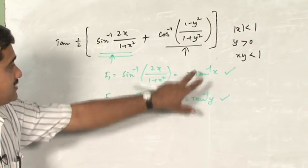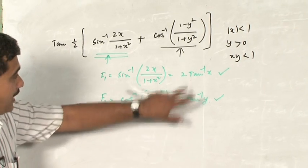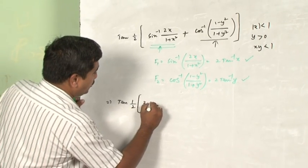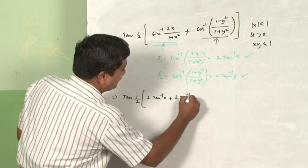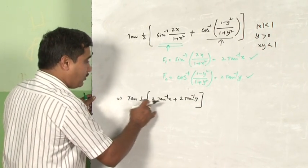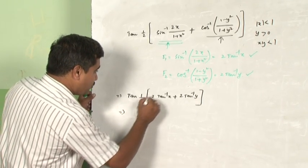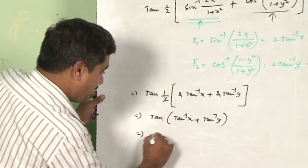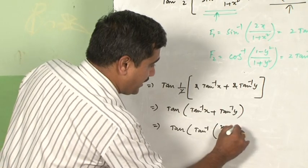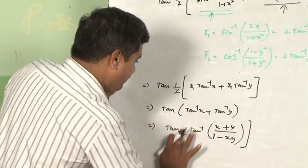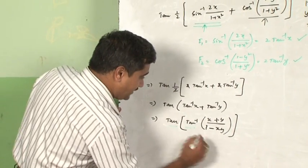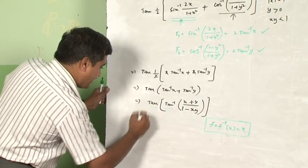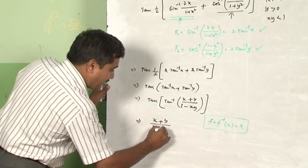Incidentally, both formulas give tan⁻¹ with 2 as a multiplier. Substituting, I get tan(½ · (2tan⁻¹x + 2tan⁻¹y)). The 2 is a common factor and cancels with the ½, giving tan(tan⁻¹x + tan⁻¹y) = tan(tan⁻¹((x+y)/(1−xy))). By the rule f(f⁻¹(x)) = x, the result is (x + y)/(1 − xy).